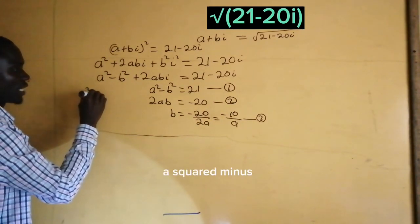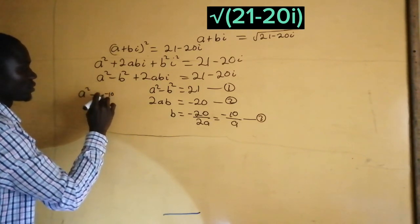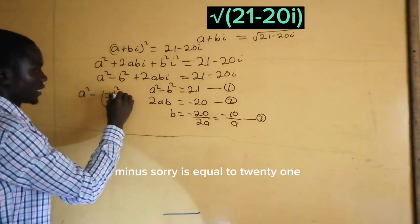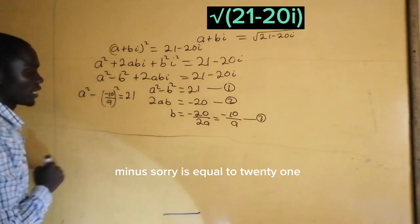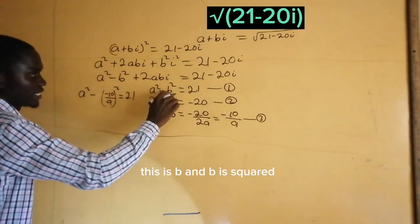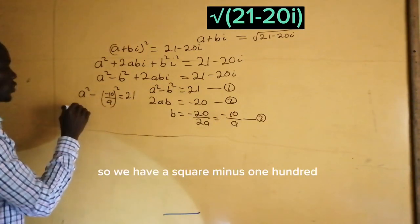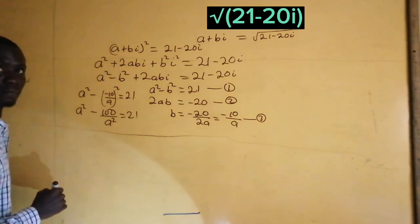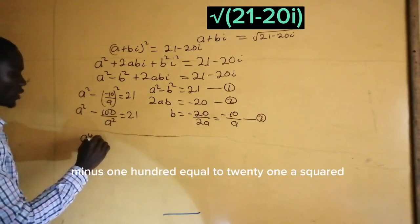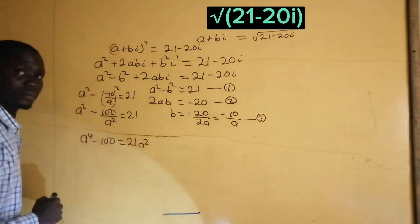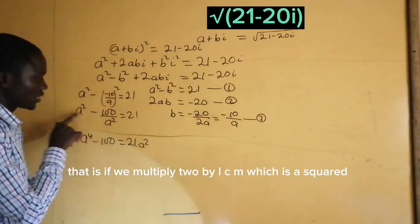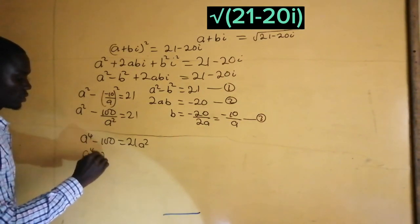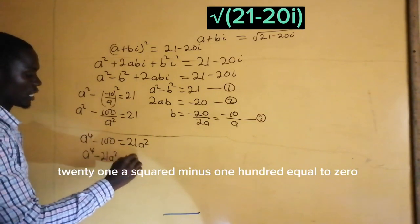So we are going to have a squared minus (negative 10 over a) squared equal to 21. So we have a squared minus 100 divided by a squared equal to 21. Multiplying through by a squared gives a to the power 4 minus 21a squared minus 100 equal to 0.